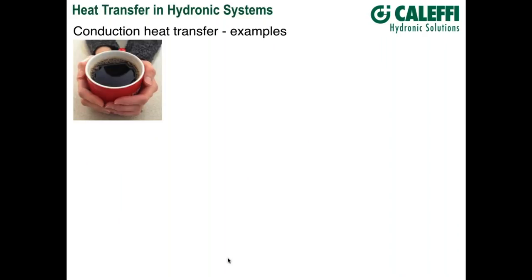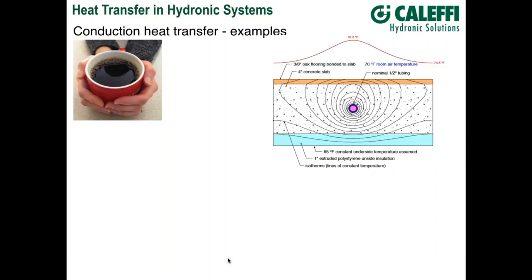One of the best ways to explain conduction: take a coffee mug, fill it with warm coffee, and put your hands around it. You can feel heat from the coffee conducting through the wall of the mug and transferring to your hands. Here's a situation very applicable in our industry — a heated floor slab. You're looking at a segment of the slab with a half-inch PEX tube in the middle, set in a four-inch concrete slab with an inch of polystyrene foam underneath and a three-eighths-inch oak floor bonded to the top.